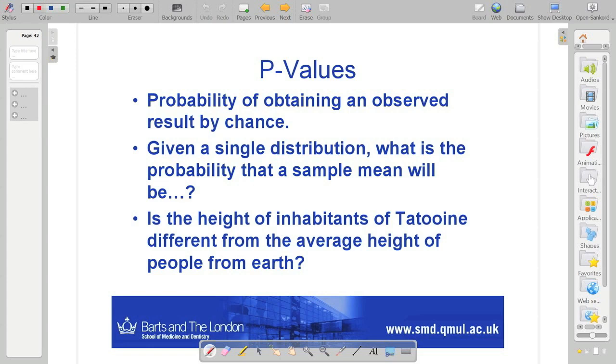So a p-value is the probability of obtaining an observed result by chance. So when we had that one population, you saw me open one data file that just had a bunch of numbers in it, and that was the population of Tatooine. And then when we sampled that, we got different means.